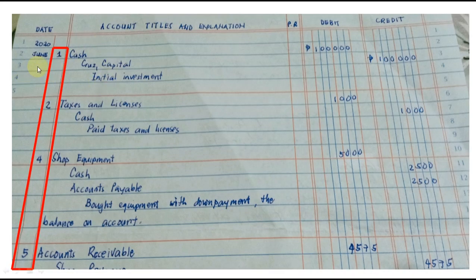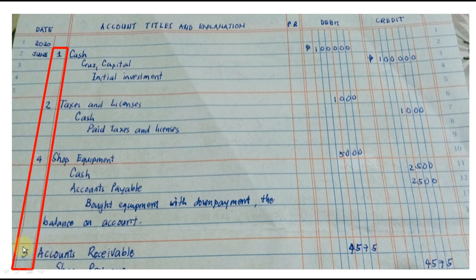So for example, we have entries dated June 1, 2, 4, and 5. You'll notice we don't repeat the month 'June' or the year for the subsequent entries. This means the following transactions happened in the year 2020, month of June — so June 1, June 2, June 4, and June 5, 2020. You write the month again only when the month changes.